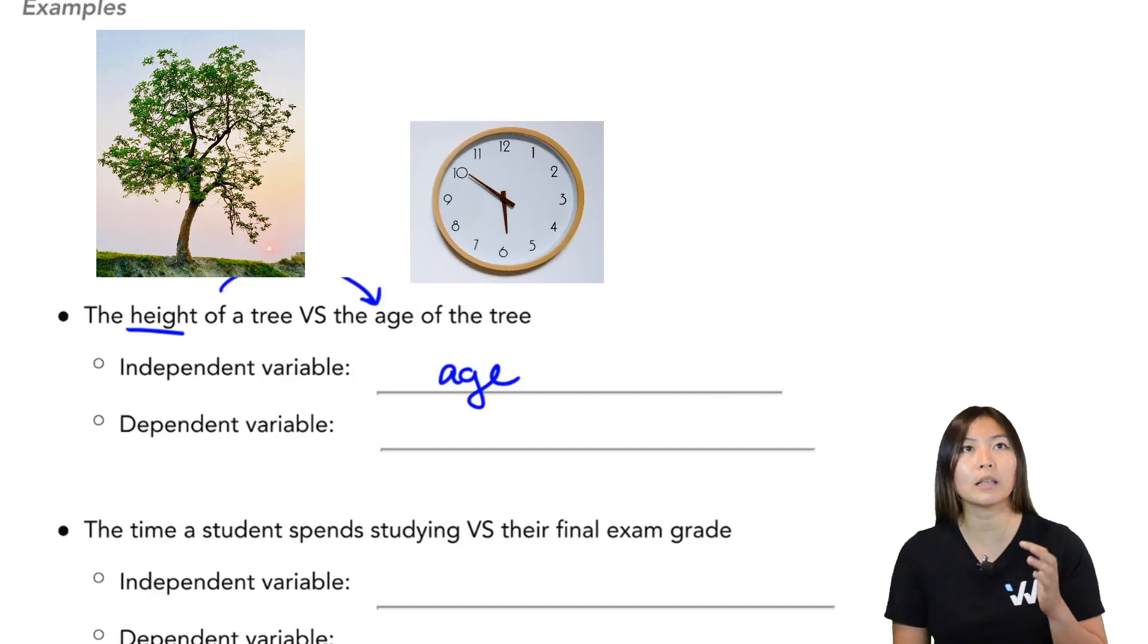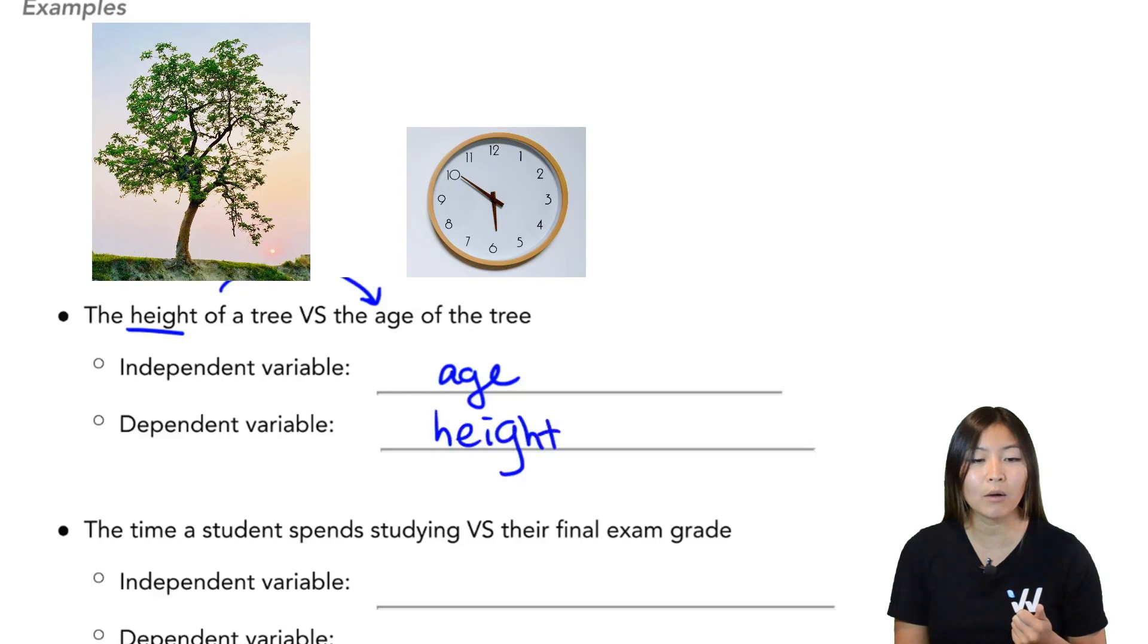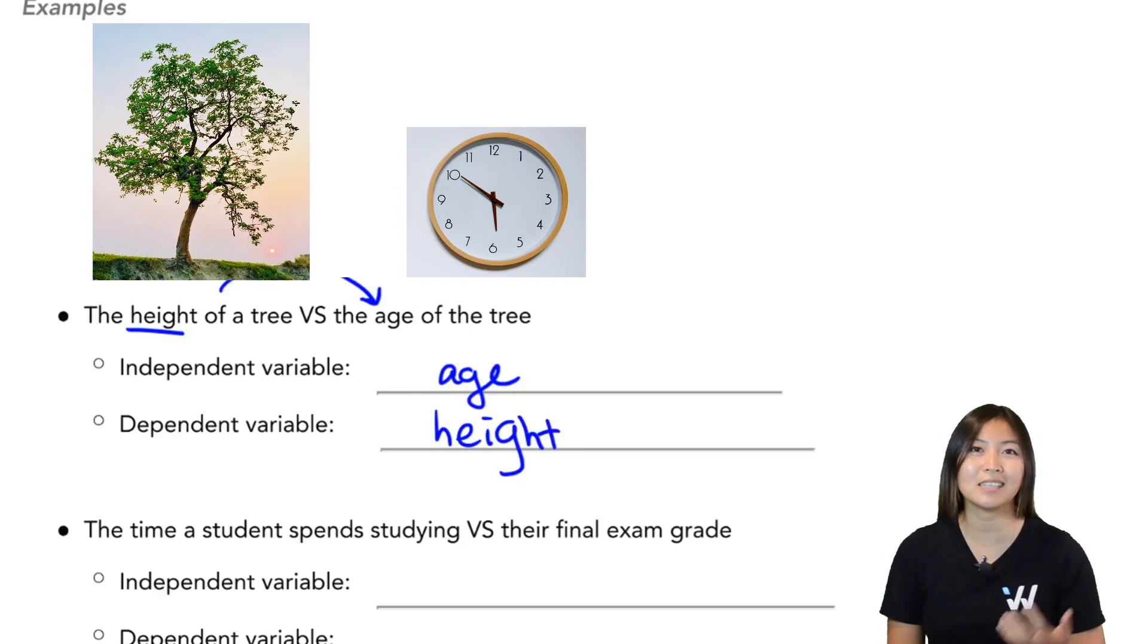So let's say I chose, okay, let's look at this tree at age three years old. Then I can see what the height is at that corresponding age. So since we choose the age, that is our independent variable. And the height of the tree depends on how old the tree is, the height is the dependent variable.